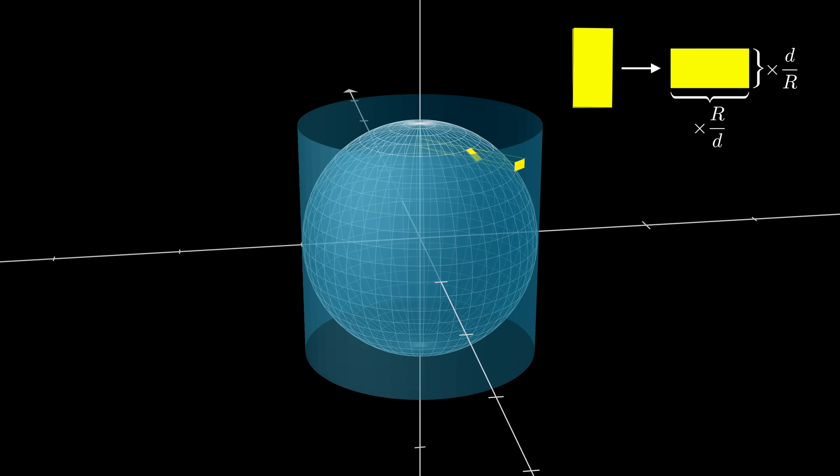As a fun side note, you might notice that it looks like the projected rectangle is a 90 degree rotation of the original. This would not at all be true in general. But by a lovely coincidence, the way I'm parametrizing the sphere results in rectangles where the ratio of the width to the height starts out as d to r.